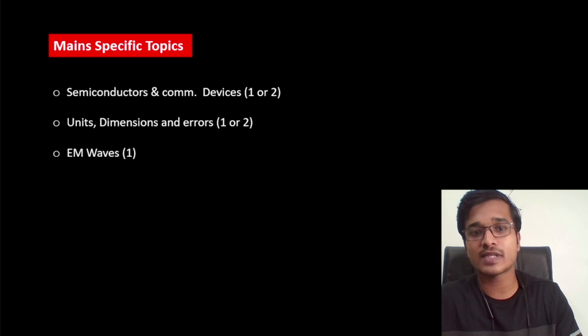If we talk about the main specific topics, like semiconductors and communication devices, you get to see 1 or 2 questions in each shift. So you can't ignore these topics. Then units, dimensions and errors - generally students ignore them, but you get to see 1 or 2 questions here. Those 2 questions in each shift were quite easy questions. So if you complete these chapters quickly, you will have a chance to gain marks. Also, EM waves had 1 question in each shift. So these are the main specific topics for us.